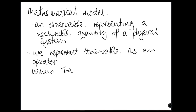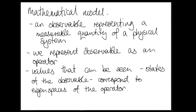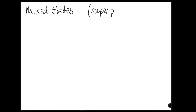The values that this observable can take correspond to the eigenspaces of the operator. These are called states of the observable. In nice cases, you have eigenspaces that correspond to eigenvalues — this might be the spectral lines for a particular element, where the eigenvalue represents how it manifests physically, such as the wavelength of light for a spectral line. Pure states are single eigenspaces. Mixed states are linear combinations of eigenspaces — these are also termed superposition states from a physics perspective.